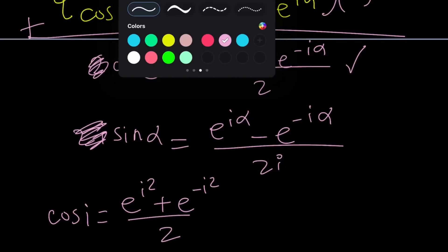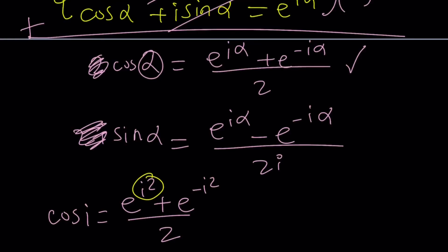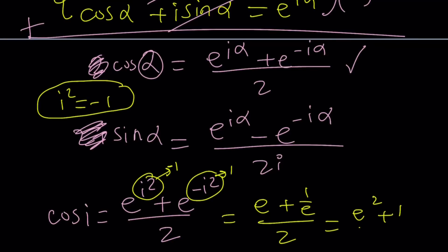i squared is what? Negative 1. Yeah, by definition, if you just need to learn one thing about complex numbers, it should be this one. And negative i squared is going to be 1. This is 1. So we're going to get e to the power negative 1. I'm sorry. This is supposed to be negative 1. e to the power negative 1. Let's just write it as e plus 1 over e divided by 2. If you make a common denominator, you're going to get e squared plus 1 divided by 2e.